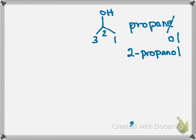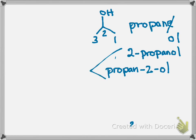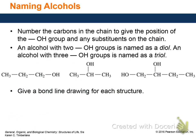IUPAC has also updated the convention to 'propan-2-ol,' placing the locant directly before the suffix for clarity. In everyday chemistry, '2-propanol' is the more commonly used form, while 'propan-2-ol' is the strict IUPAC standard.